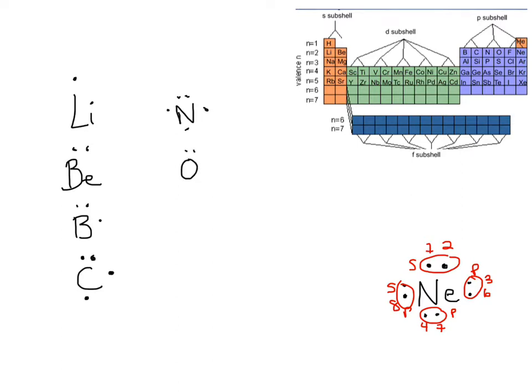Okay, oxygen has six, two at the top, one, two, three, around it. And now I can start doubling back up. And again, you can move around clockwise or counterclockwise. Either way is fine.